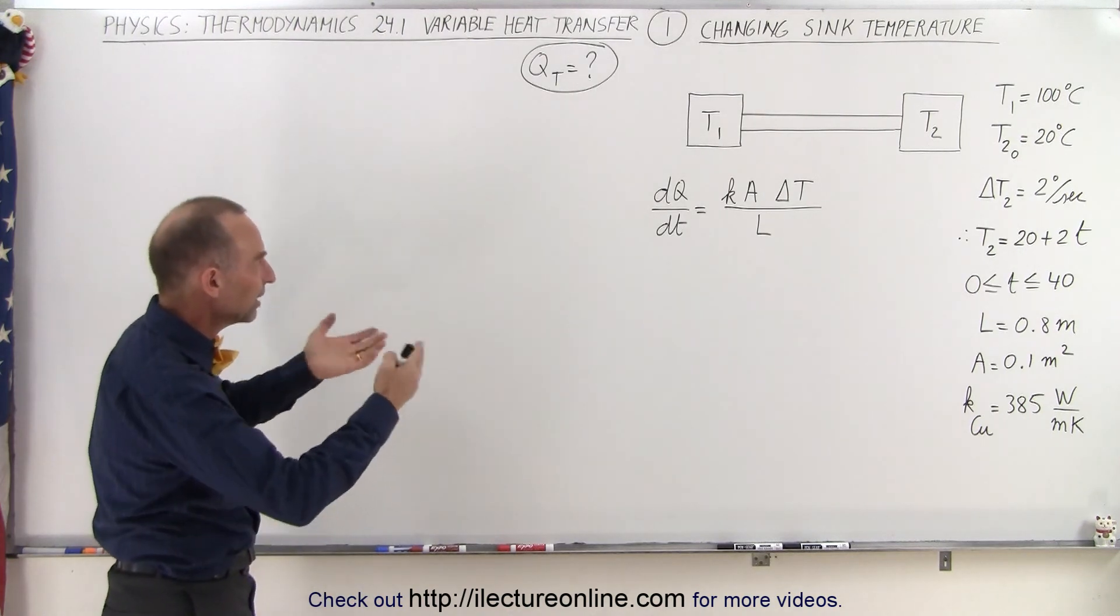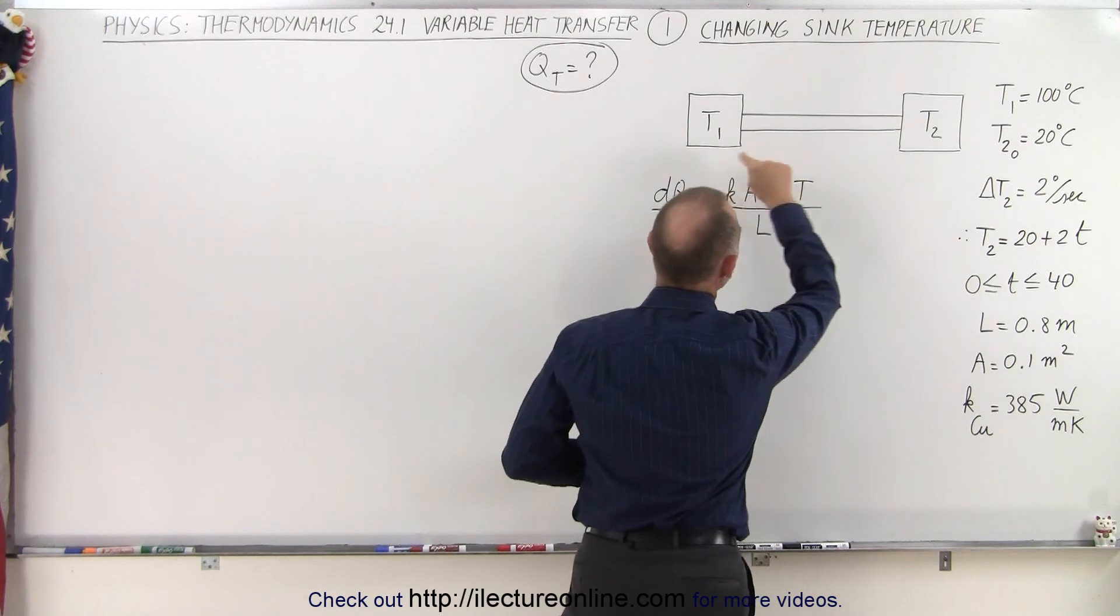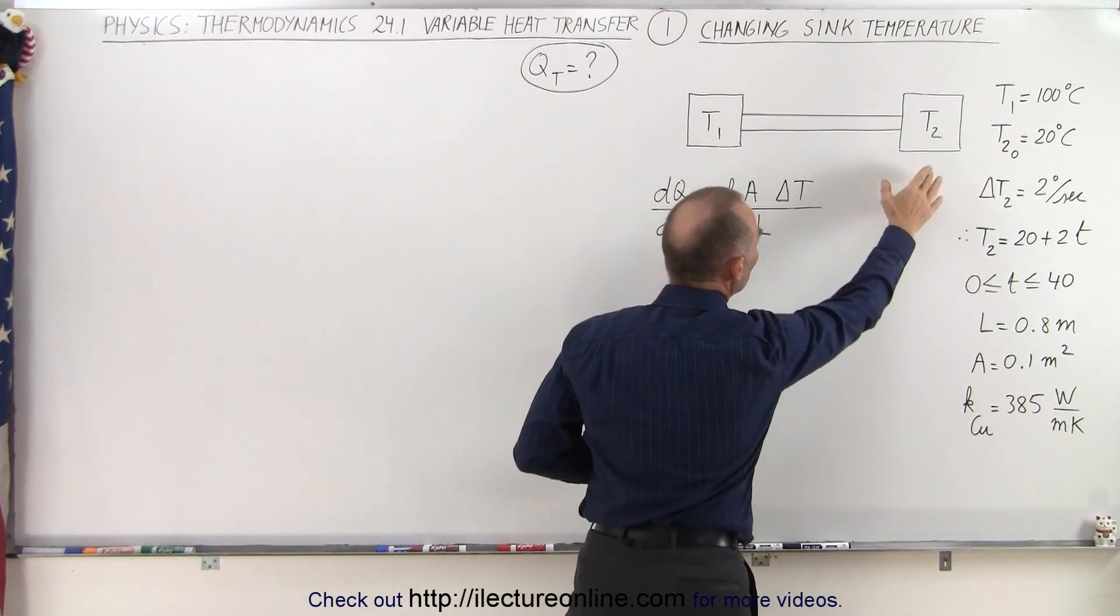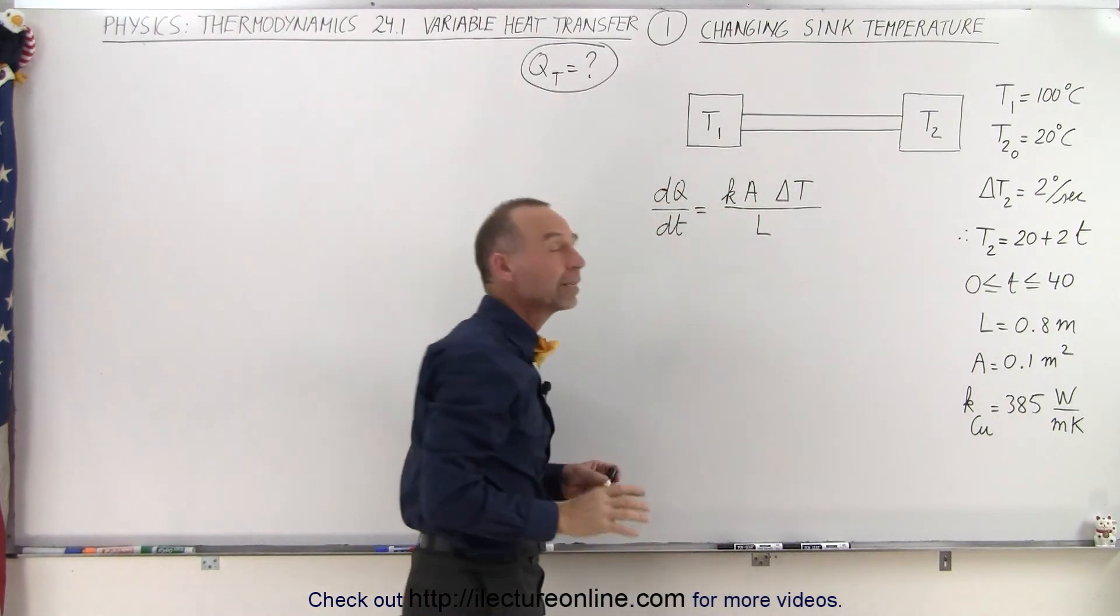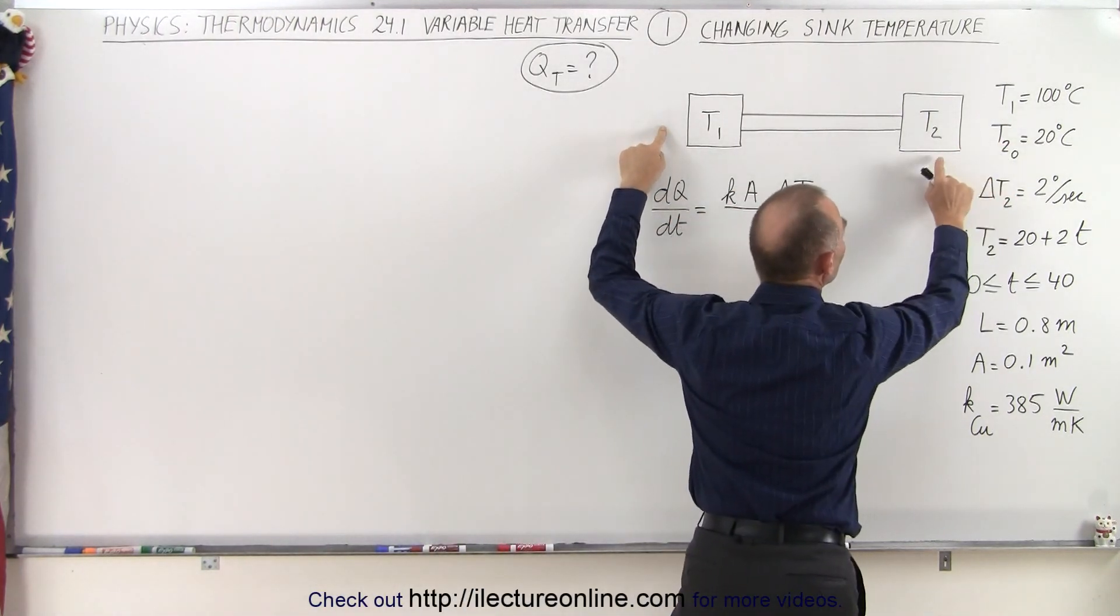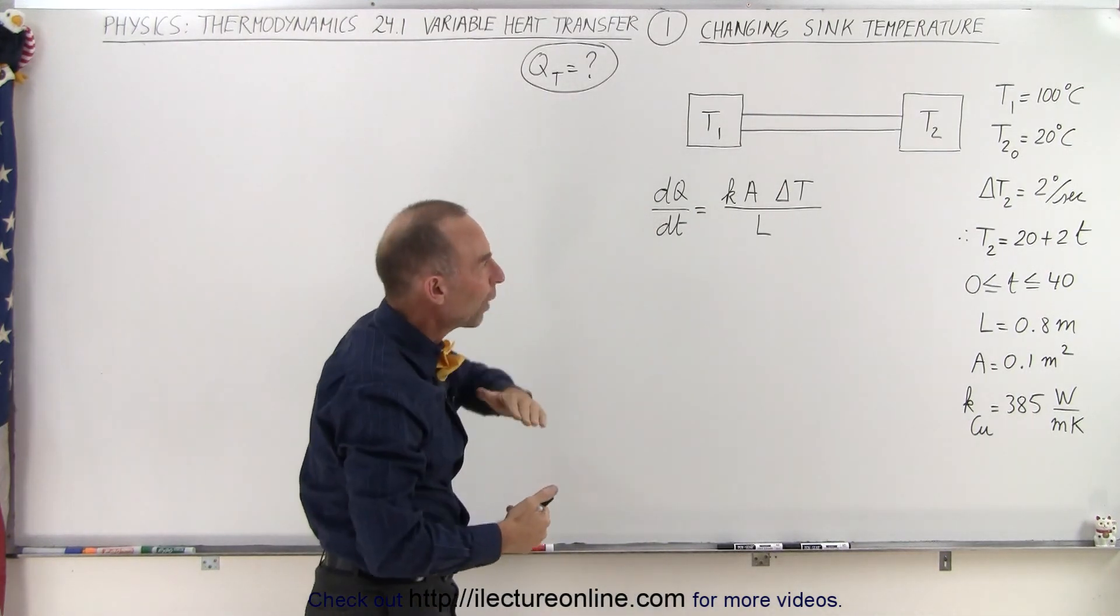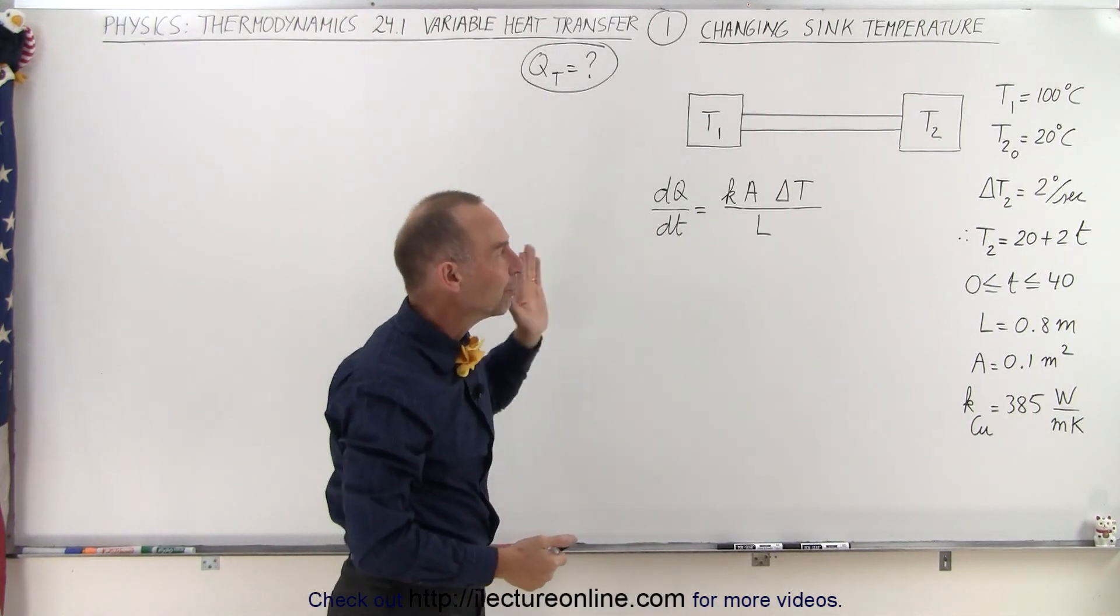So what we're doing here in this example, we're trying to calculate the heat transferred from T1 to T2, knowing that T2 does not remain constant. T1 does, the hot temperature stays at 100 degrees centigrade, but the cold temperature, the cold sink or the heat sink, rises in temperature as more and more heat is being transferred.